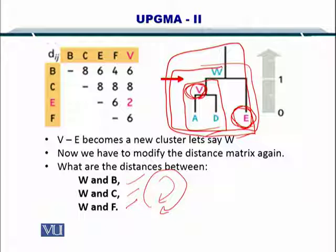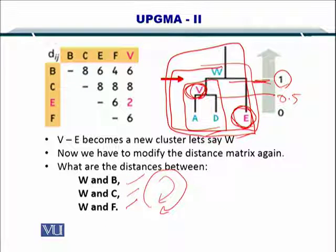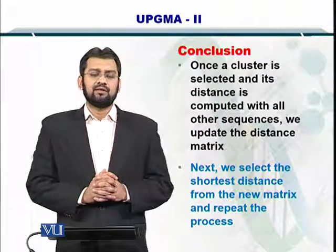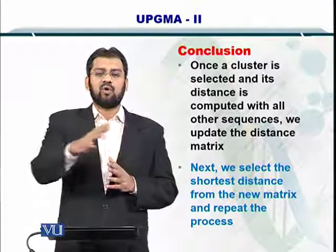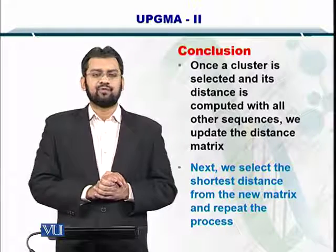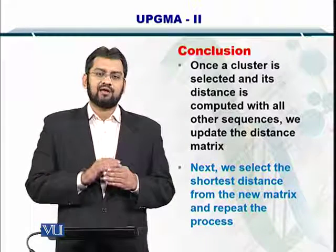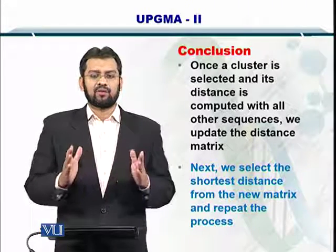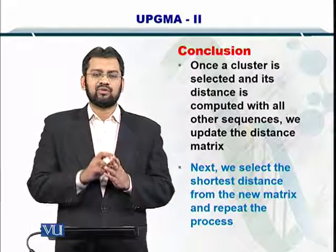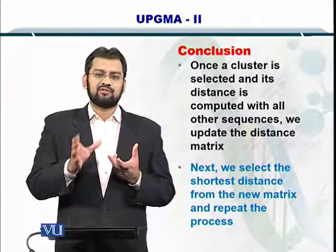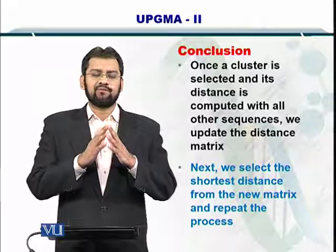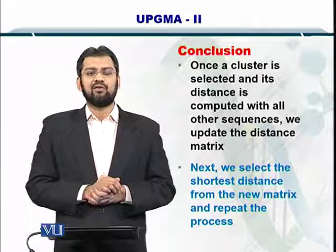So in conclusion, once a cluster is selected, then you have to compute its distance with all other clusters and sequences. Let me clarify here once again that in the first distance matrix only comprises of the sequences. But once you make a cluster out of two sequences, then you have a cluster and several sequences in the distance matrix. You continue on creating these clusters and at the end you get the whole phylogenetic tree.